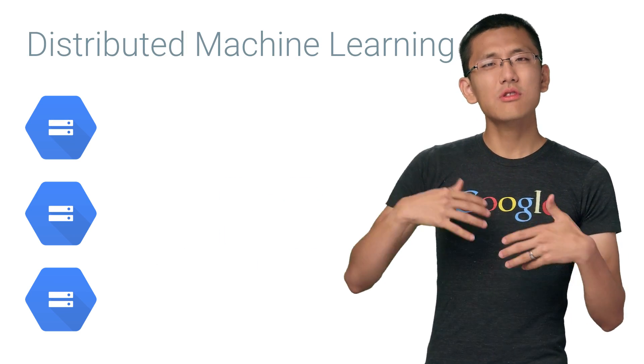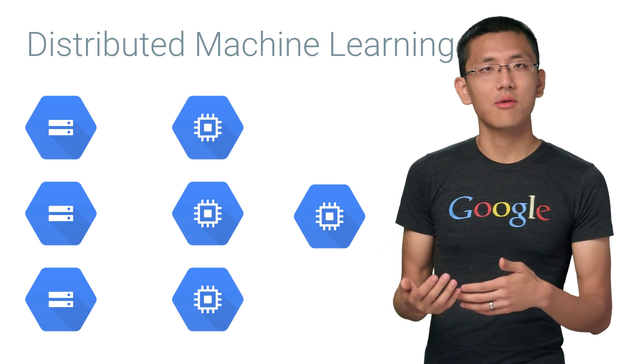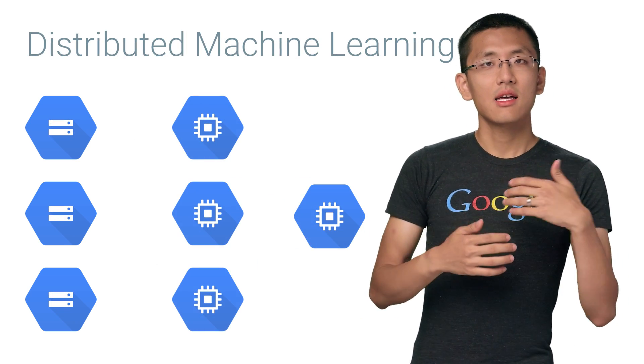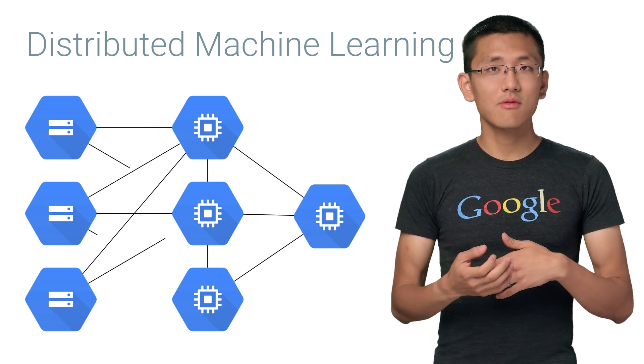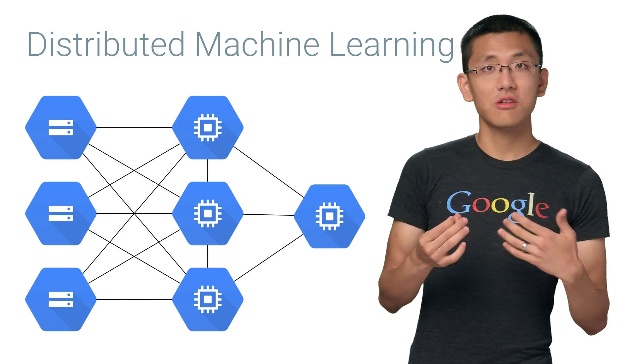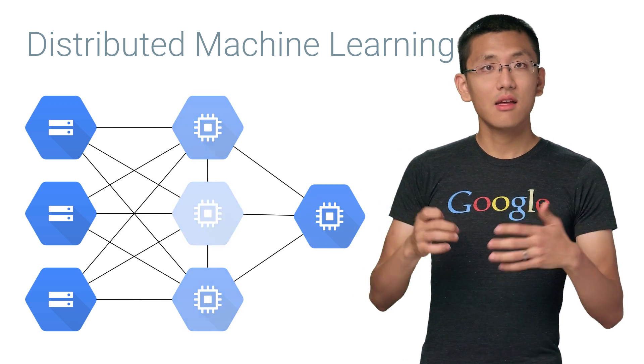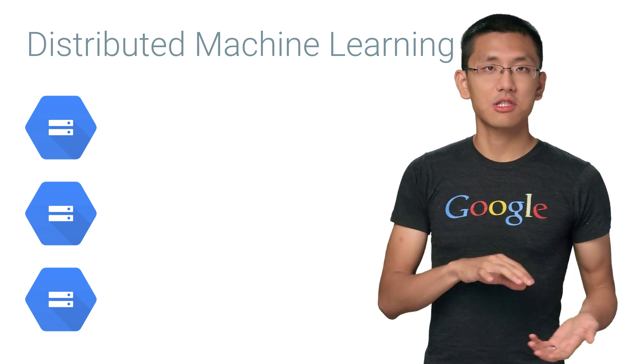Now, you could spin up some virtual machines and install the network libraries, network them together, configure them to run distributed machine learning, and then when you finish, you'd want to take down those machines. While this may seem easy to some, it can be a challenge if you're not familiar with things like installing GPU drivers and debugging compatibility problems between different versions of the underlying libraries.